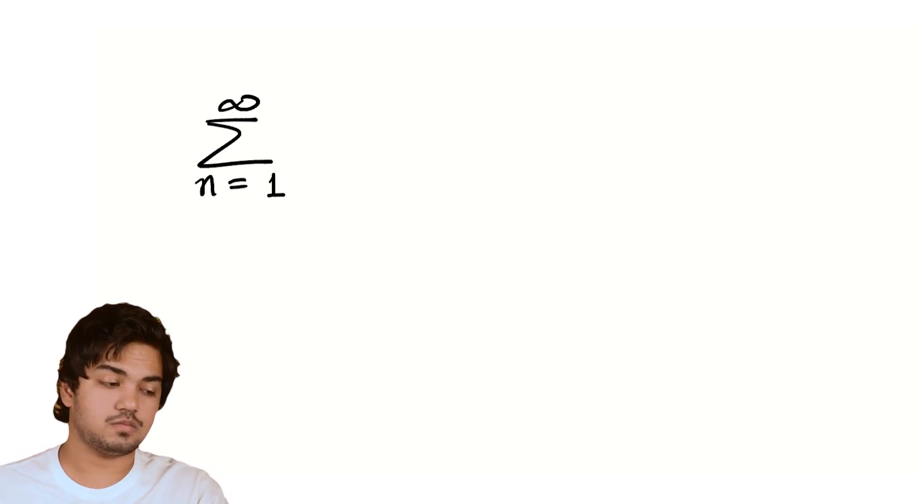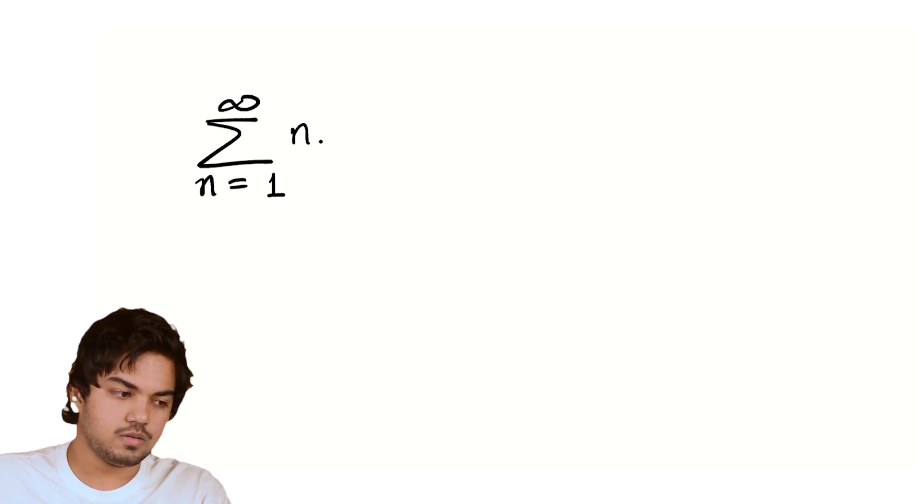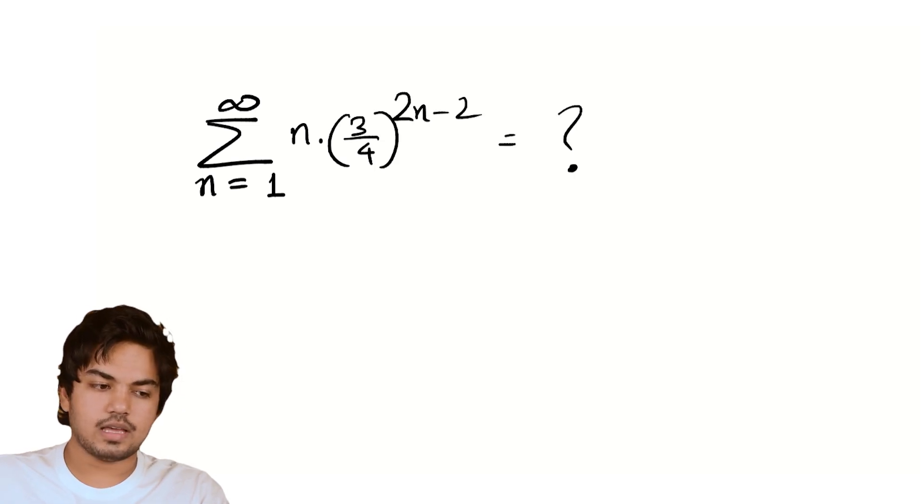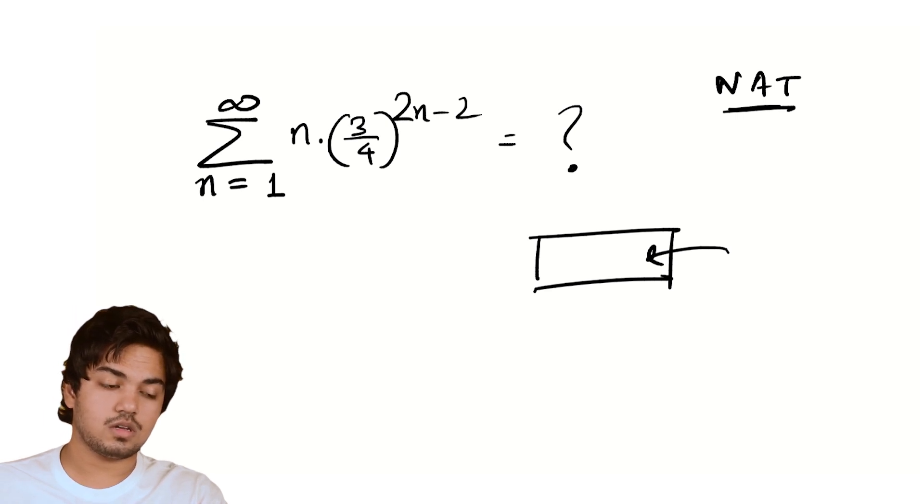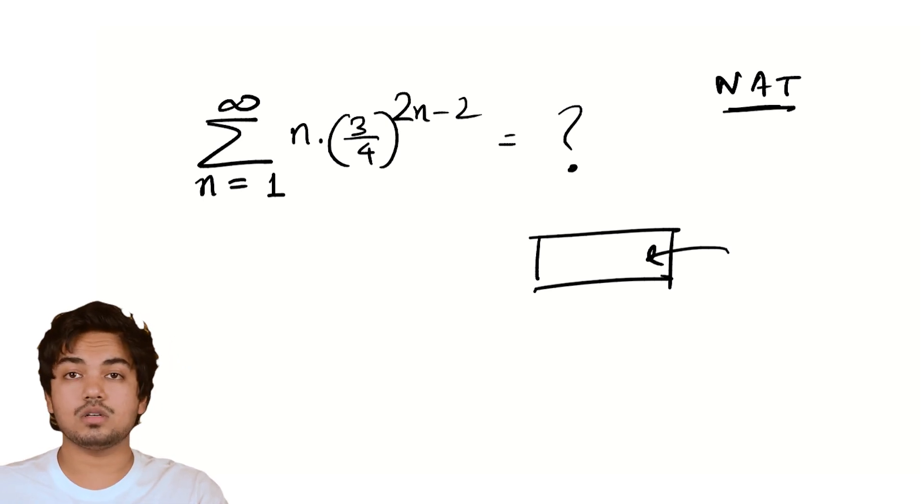If my memory serves right and I hope it does, the problem was sum over n equals 1 to infinity, an infinite sum. What is this sum where the summand is n into 3/4 to the power 2n minus 2? This was a numerical type question where there was a little box and you had to input the answer, and you had to round it up to two decimal places. So if your answer was π, you would say 3.14. So this is the problem.